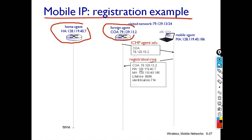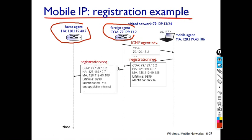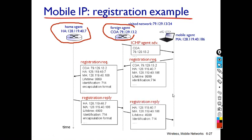On receiving this information, the foreign agent sends it to the home agent. The home agent verifies the authentication and authenticity of the message, then maps the care-of address with the permanent address of the mobile in its database. It then sends a reply back to the foreign agent, which forwards it to the mobile device. This is called registration of Mobile IP in the foreign network. Now both the foreign agent and home agent are aware of the mobile node's new address.